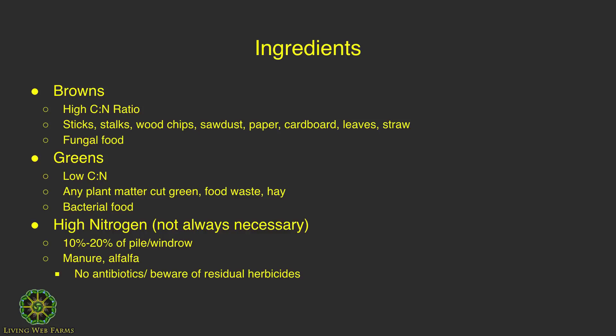Going out into a pasture and getting cow patties works great — you're normally even getting red wigglers or manure worms in that, which helps you get more decomposition. If you're getting conventional alfalfa or other ingredients like straw, you have to be aware of residual herbicides. A lot of straw nowadays is treated with herbicides that are residual and, even after the composting process, can have a bad effect on plants.